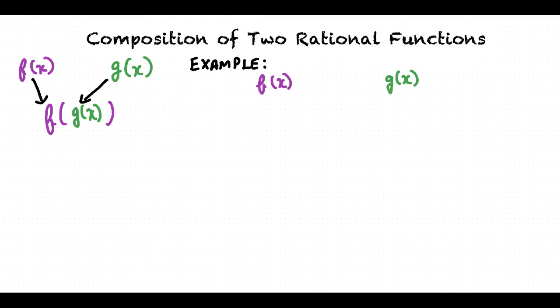Let us take an example. Let's say we have two functions f and g such that f equals 2x plus 1, and g equals x plus 1 over x plus 2.